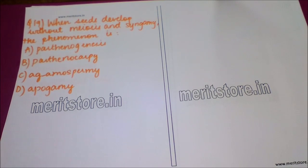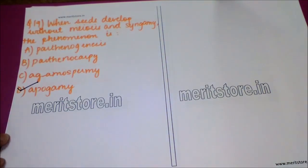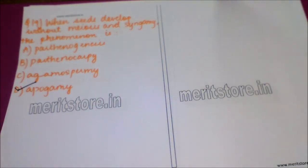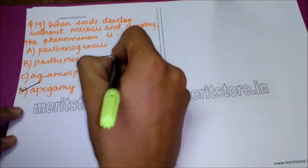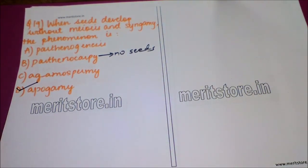The next question is: when seeds develop without meiosis and syngamy, the phenomenon is called? Option A: parthenogenesis. Option B: parthenocarpy. Option C: agamospermy. Option D: apogamy. The correct answer is option D — apogamy. Parthenocarpy is the condition wherein no seeds are generated, exhibited in fruits like banana. However, in apogamy, seeds are developed but without meiosis and syngamy.